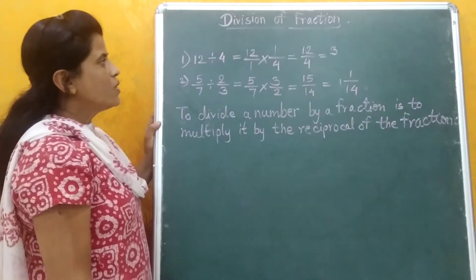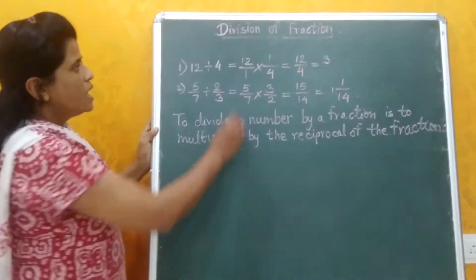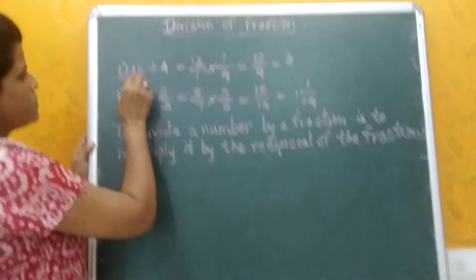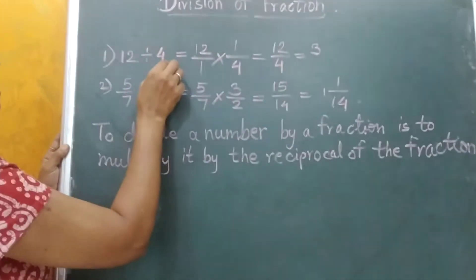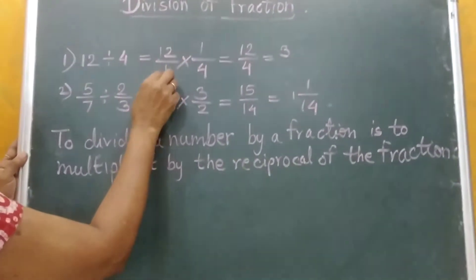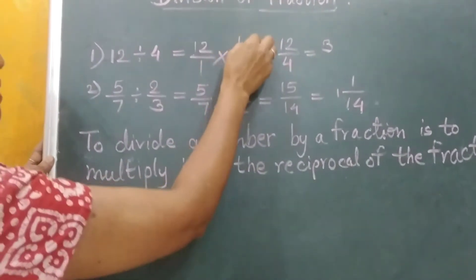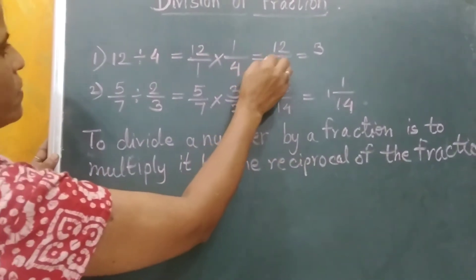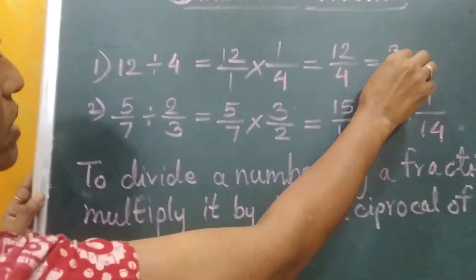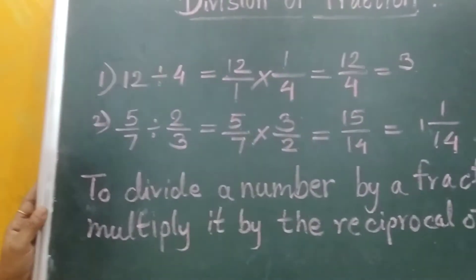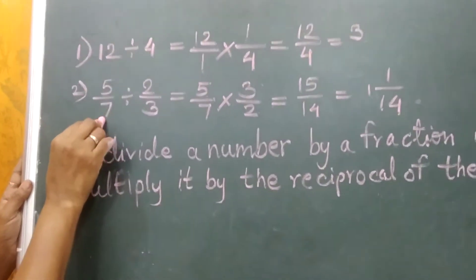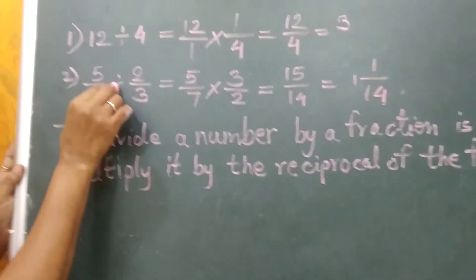Hi friends, today we are going to see the revision of fractions. Here is one example: 12 divided by 4, which means 12 upon 1 is multiplied by 1 upon 4, which is equal to 12 upon 4, and which is equal to 3. See the second example: 5 upon 7 divided by 2 upon 3.